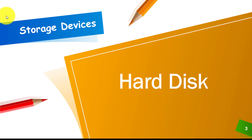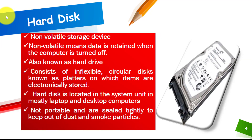The first one we have is a hard disk. A hard disk is a non-volatile storage device, or you can say it is a large backing storage device. Non-volatile means the data is retained when a computer is turned off. It is also called a hard drive, and it consists of inflexible circular disks known as platters on which items are electronically stored. The hard disk is located in a system unit in most laptops and desktop computers.